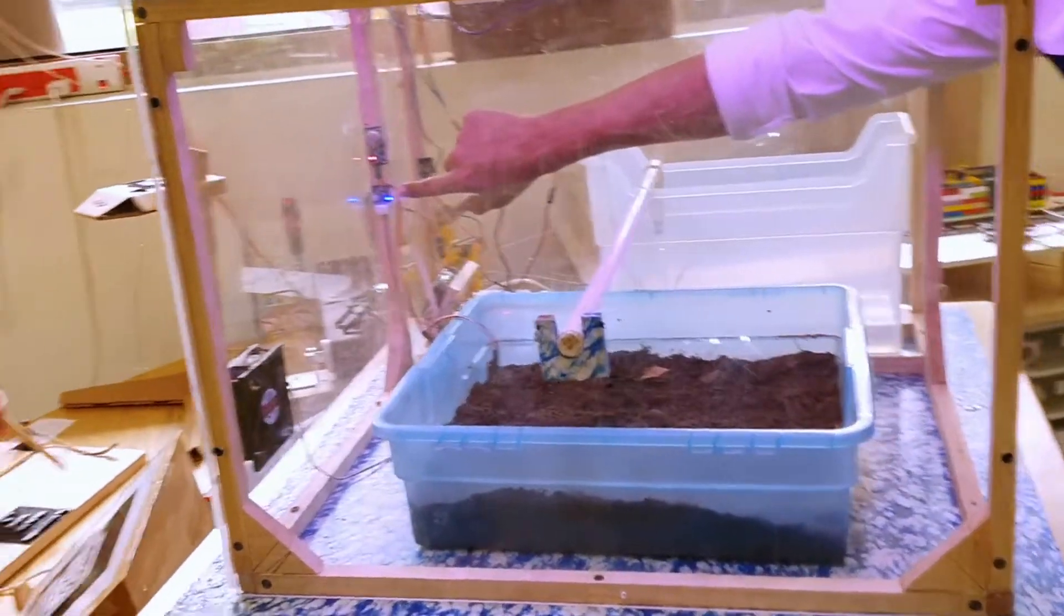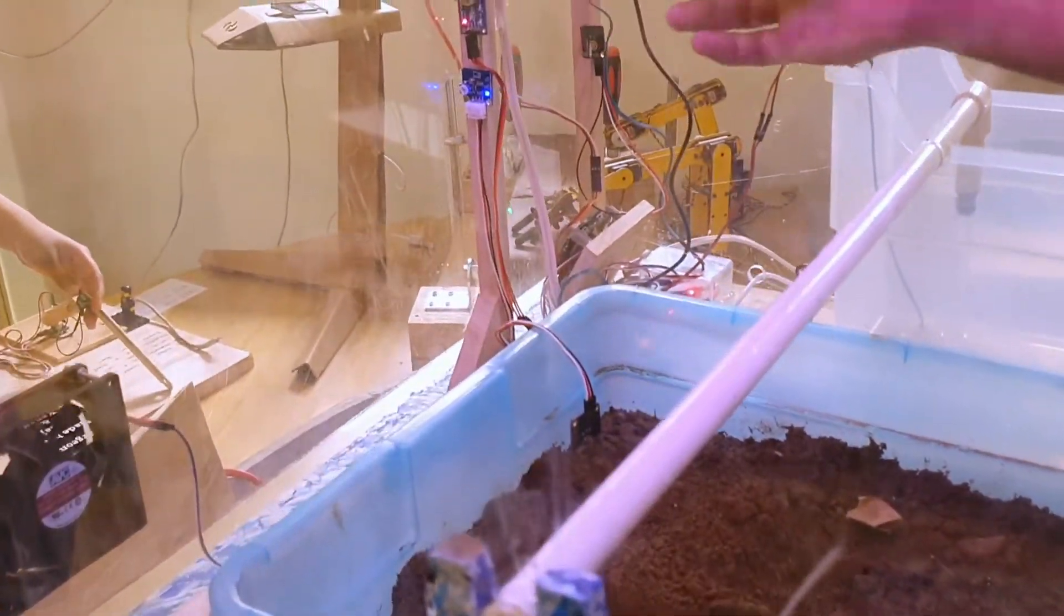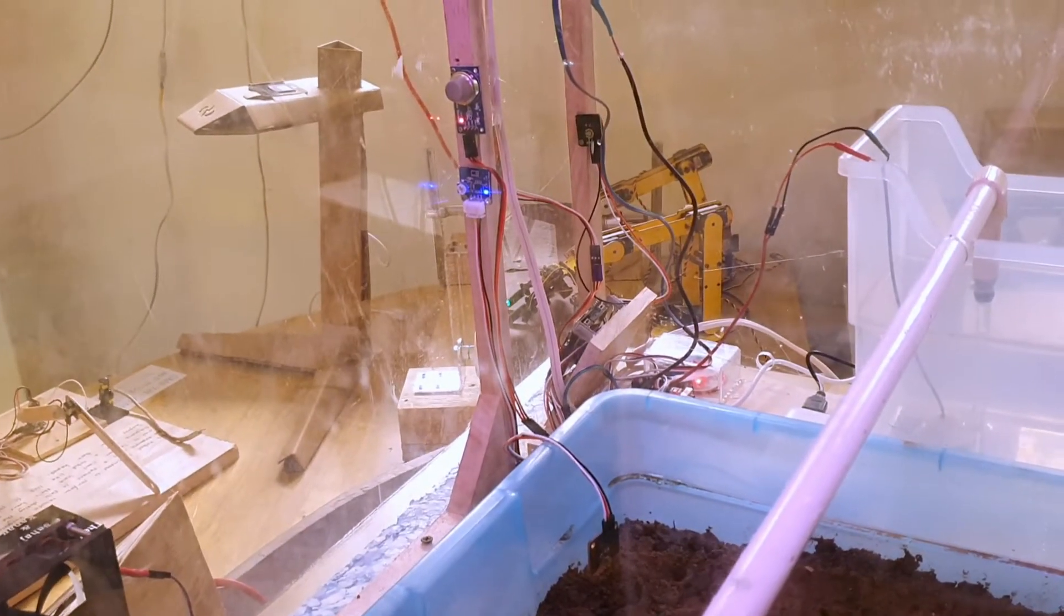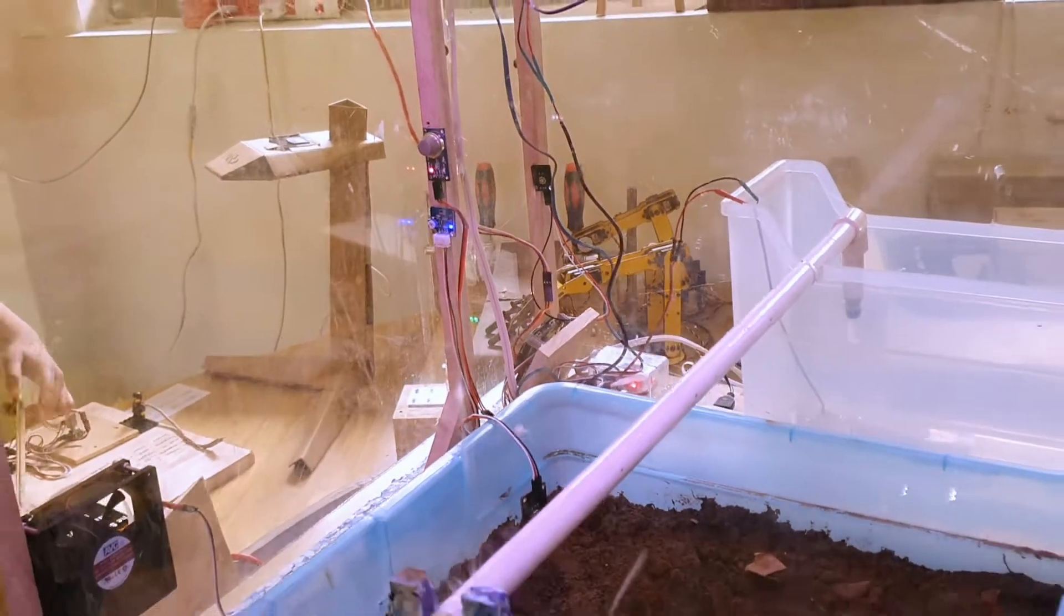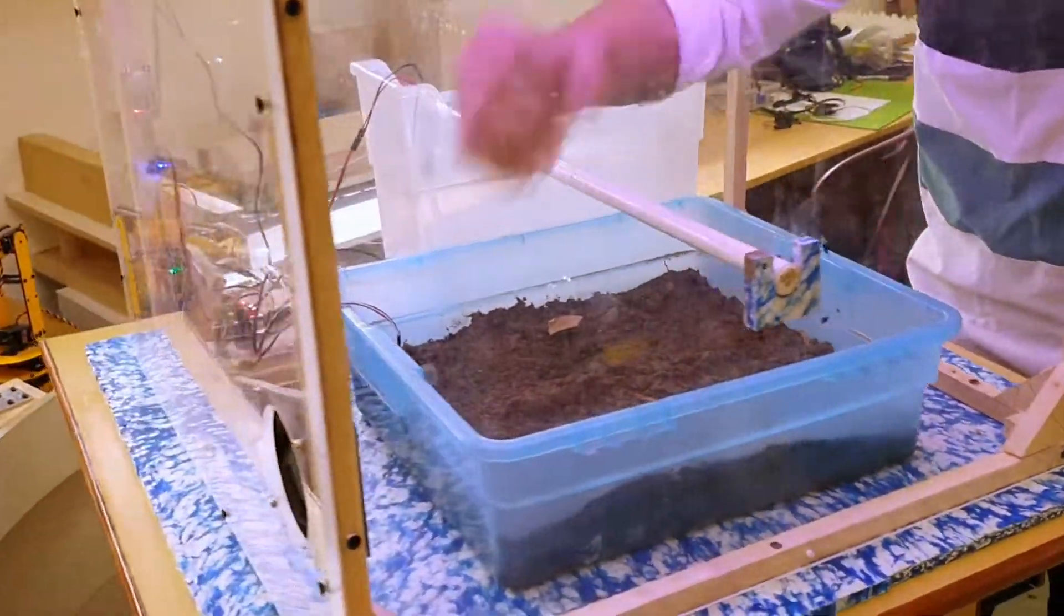This one is the temperature sensor which can give the data of what temperature is in the greenhouse. If it is too hot then we can turn on the fan for the ventilation. When the fan turns on,